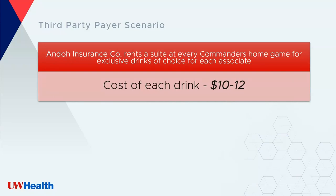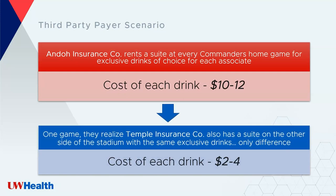I wanted to start with a third-party payer scenario. Imagine an insurance company rents a suite at every Commander's home game with exclusive drinks costing ten to twelve dollars each. One game, they realize another insurance company also has a suite on the other side of the stadium with the same drinks, but they're only paying two to four dollars. Now we're wondering — why are we paying ten to twelve dollars for the same drinks that they're getting for two to four dollars?